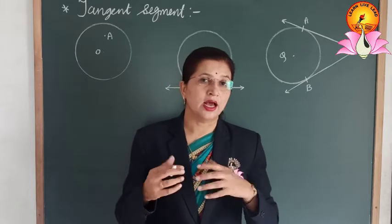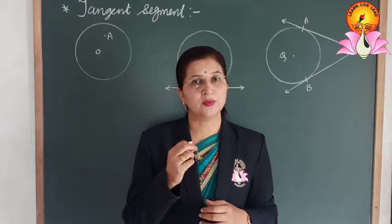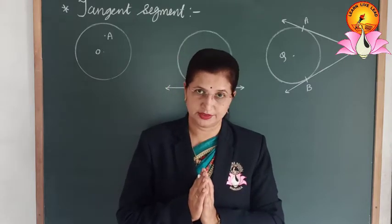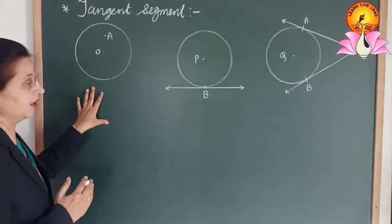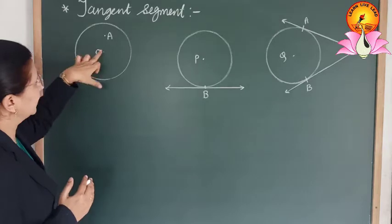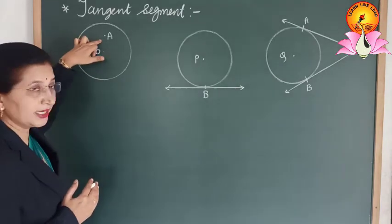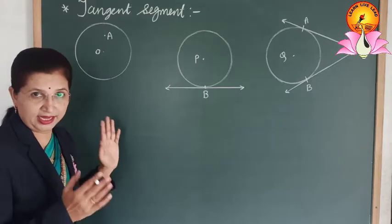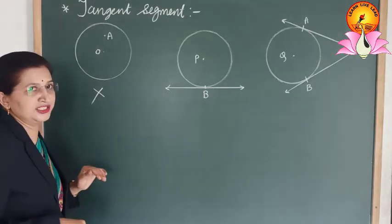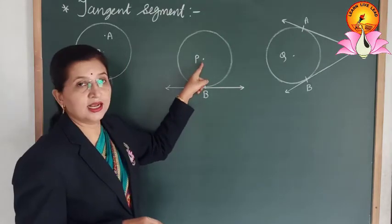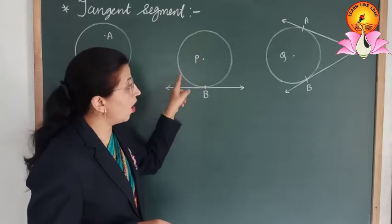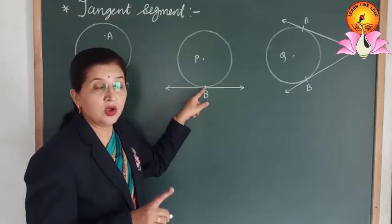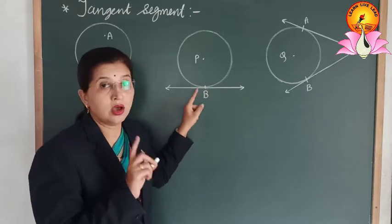The question is: how many tangents can we draw to a circle passing through a given point? To answer this, we need to know the position of the given point. Here, you can see a circle with center O, and there is a point A inside the circle — interior to the circle. We cannot draw any tangent to the circle passing through point A, as it is interior. In the second figure, the circle has center P and point B is on the circle. From a point on the circle, we can draw one and only one tangent.